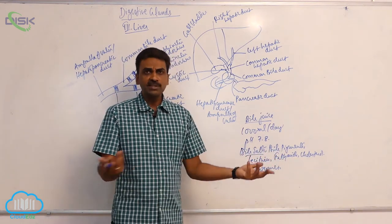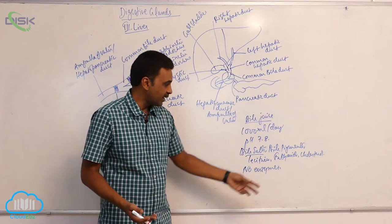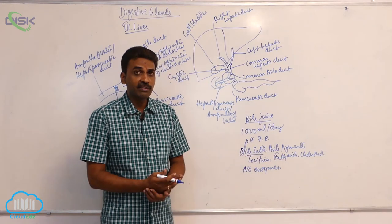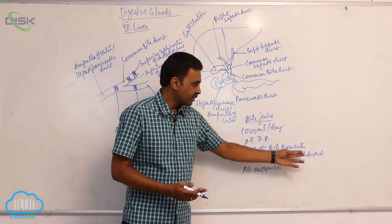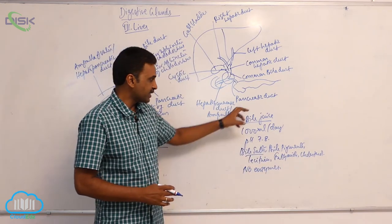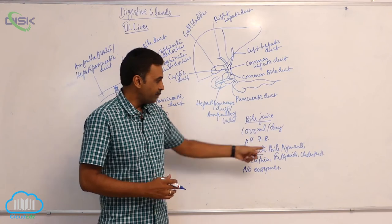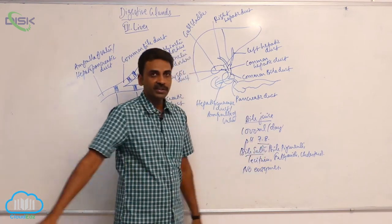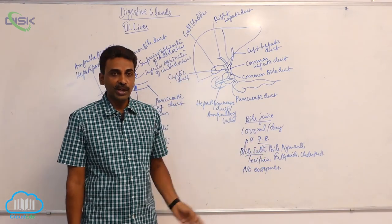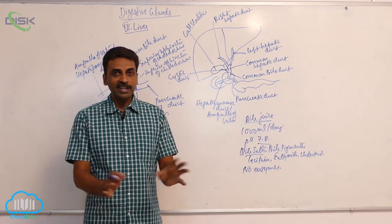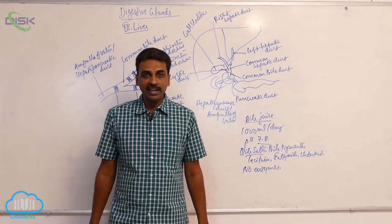Bile pigments are of no use. They are discarded outside. They are metabolic end products of RBC. Fatty acids and cholesterol are also present in bile juice. The pH is 7.8, and roughly one liter of bile juice is produced per day. It doesn't contain any digestive enzymes.